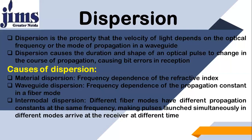Modes arrive at the other side of the optical fiber at different times for many reasons. One reason is having different velocity because of frequency change or refractive index change. Also, every mode has its own distance to travel — some modes travel more distance compared to others. So all the modes reach the receiver at different times.